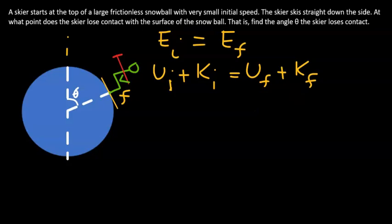Since we are told that the skier starts at the top with very small initial speed, that means the kinetic energy at the initial point can be neglected and can be taken to be zero. So let's work out these three terms. What is the gravitational potential energy at the initial point?